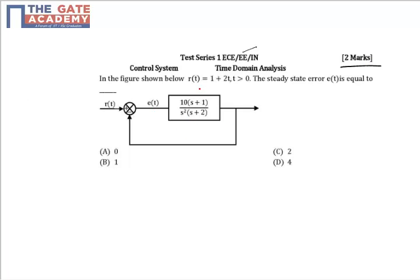The question says for the closed-loop control system shown below, if the input signal RT is 1 plus 2T, which is a ramp signal, then find out the steady state error ET. We have this second order control system.